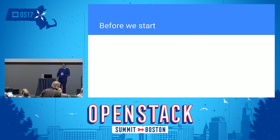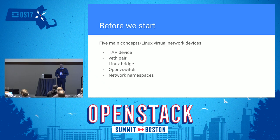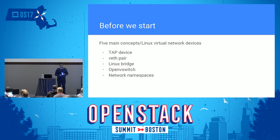Before we start, I'll first explain five main Linux native technologies that are used by Neutron: TAP devices, VEth pairs, Linux bridge, OpenVSwitch, and network namespaces.